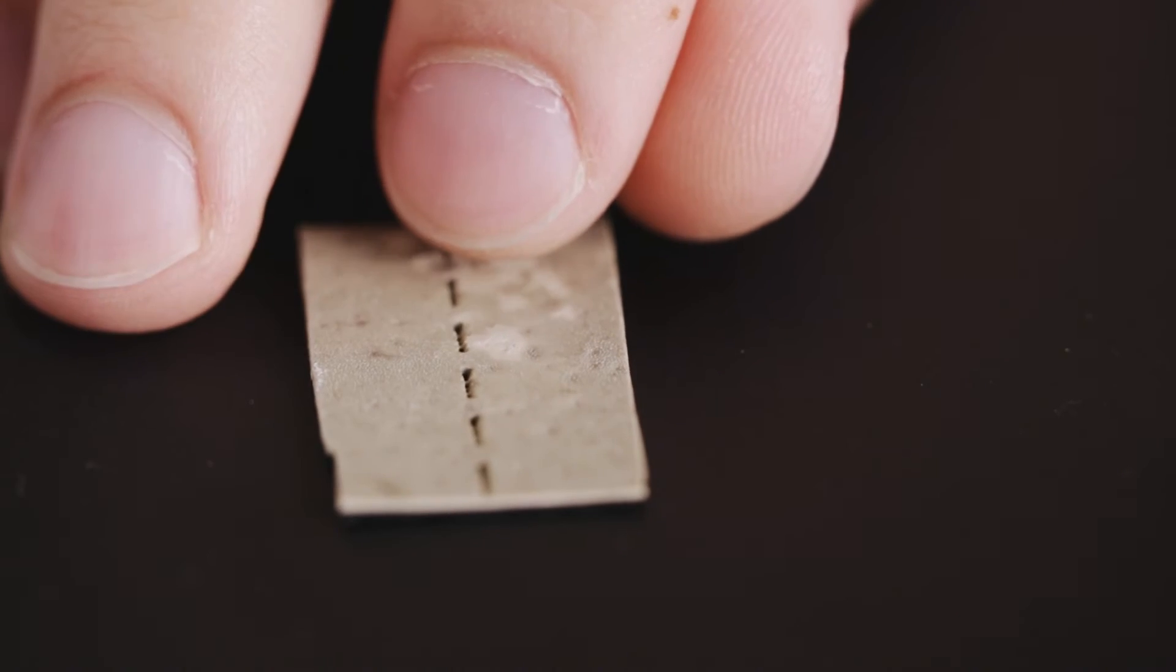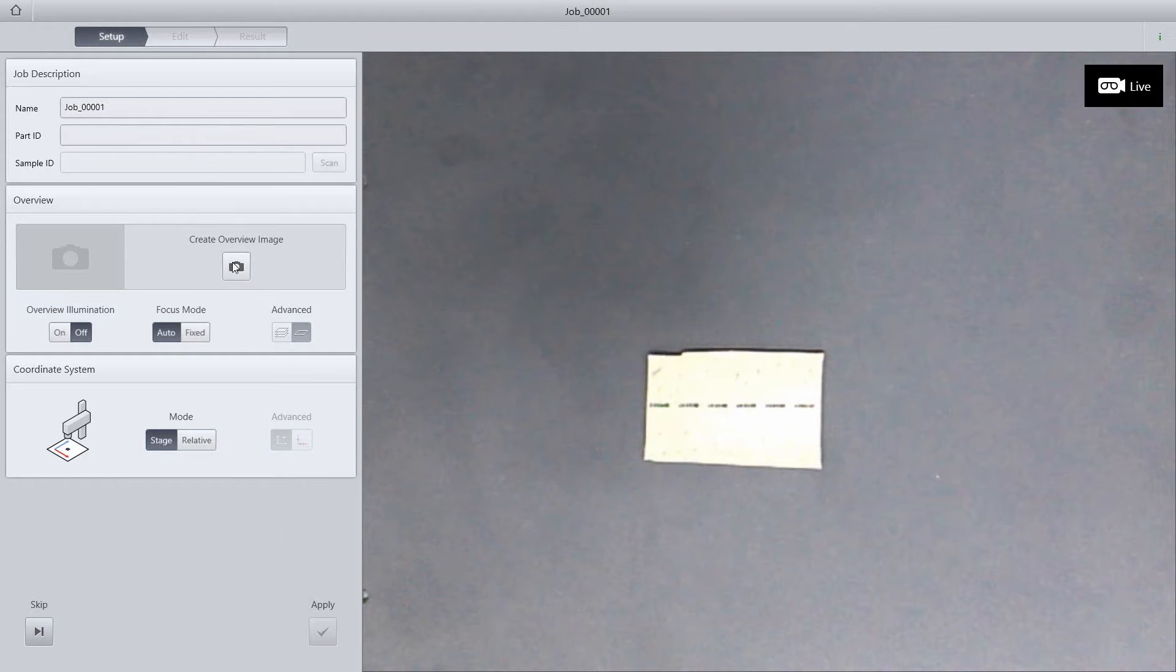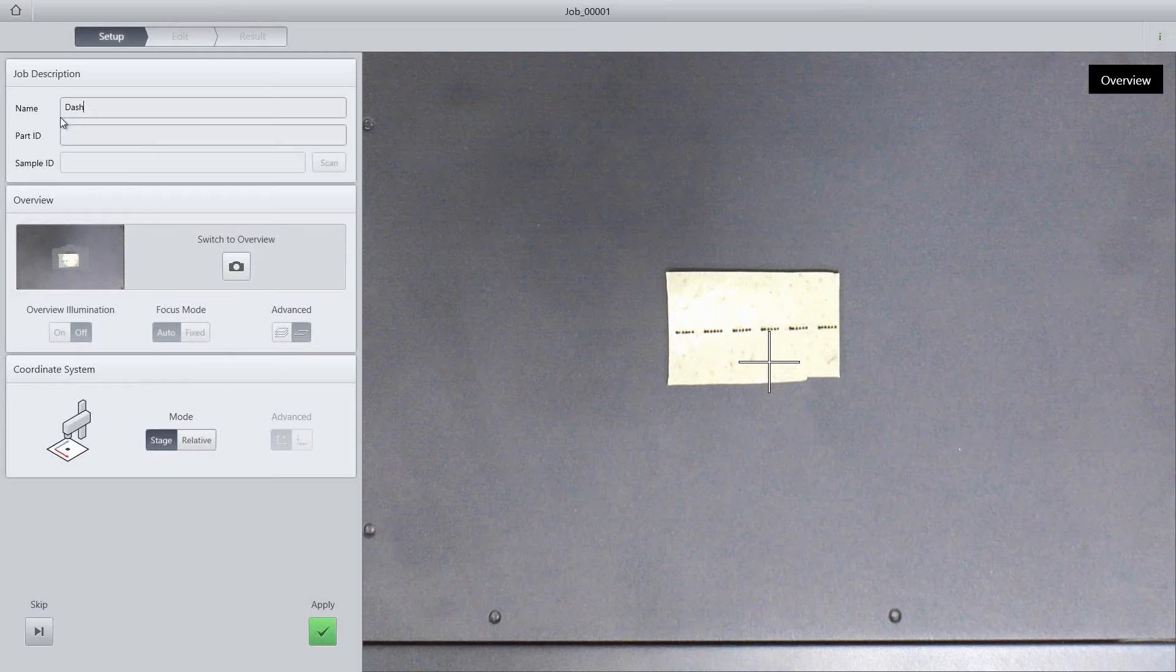Just put your sample on the stage. The overview camera shows you exactly where you are at any given point, even when examining larger parts.